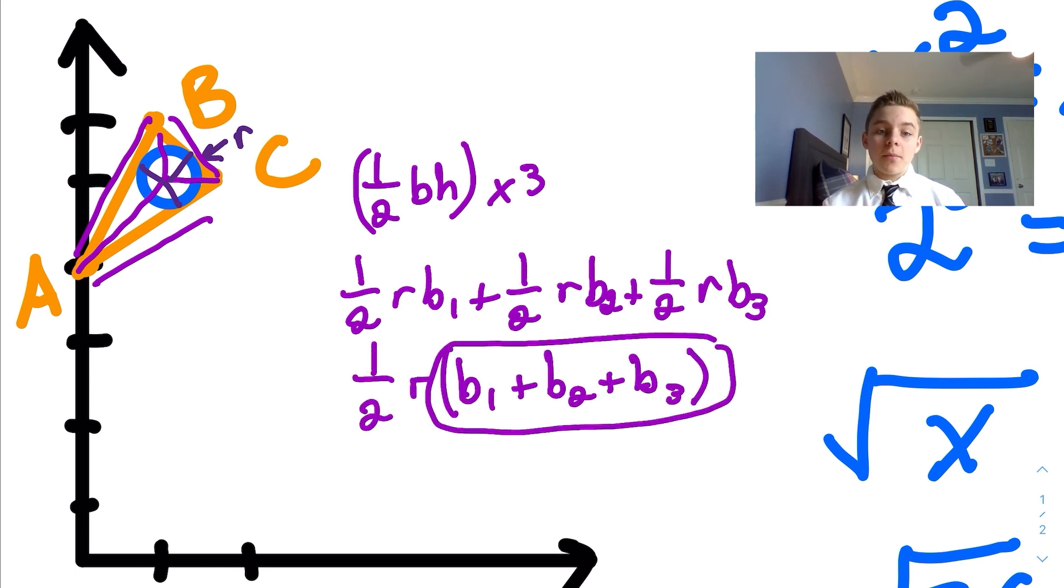This right here is the perimeter of our triangle. So this equation is area equals 1/2 radius times perimeter. To make things easier, we also have to divide by p on each side to get the area divided by perimeter equals the radius divided by 2.